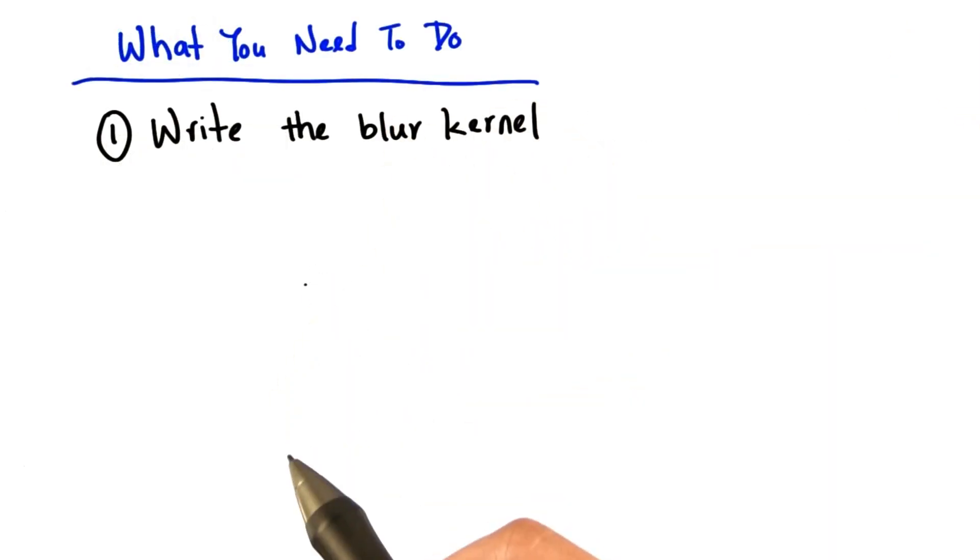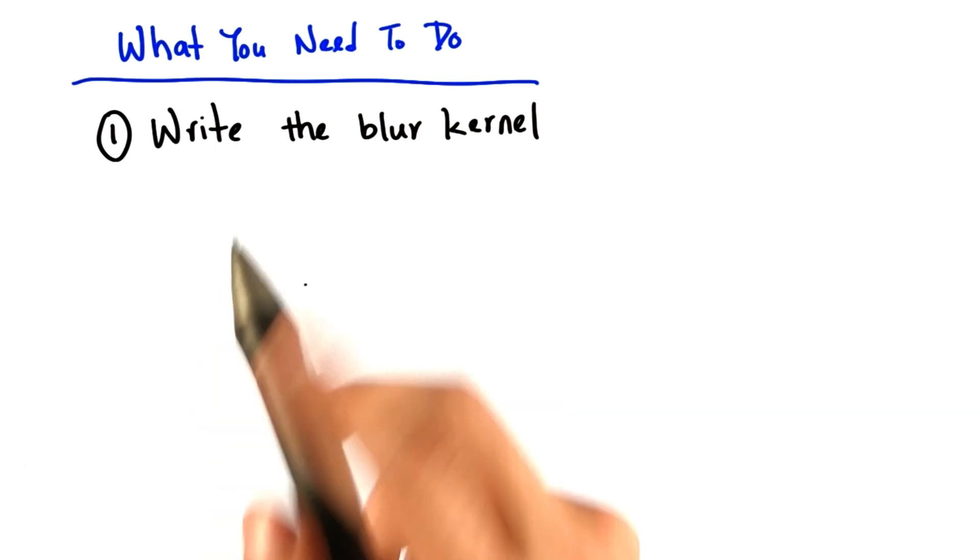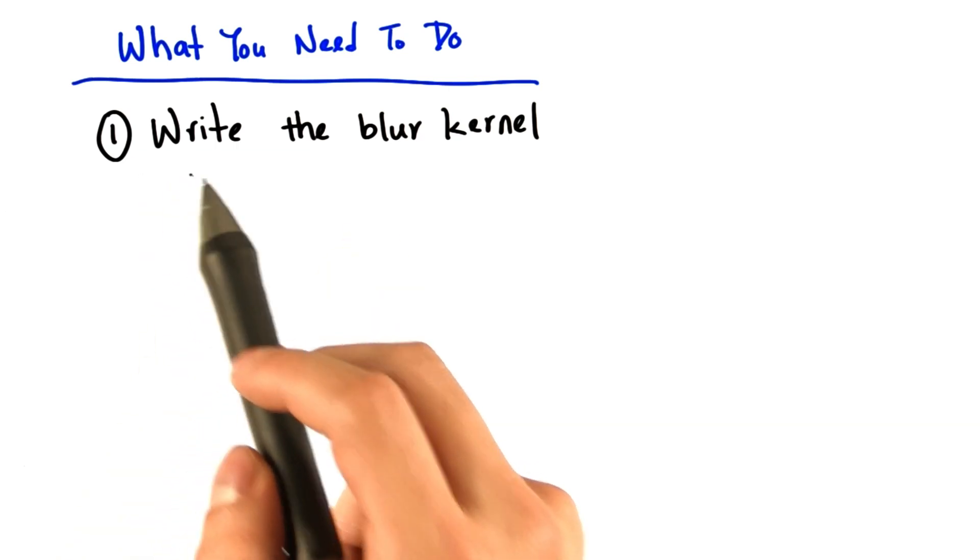So this is what you need to do for problem set number two. First, you will need to write the actual blur kernel.